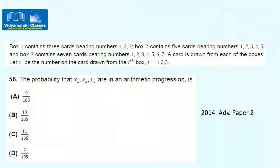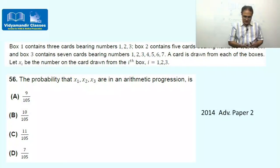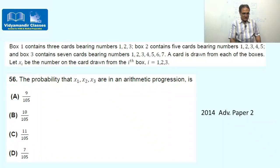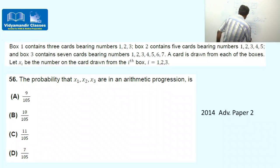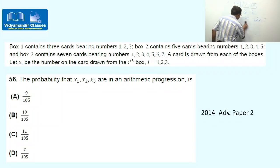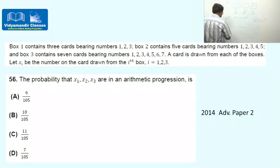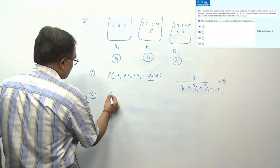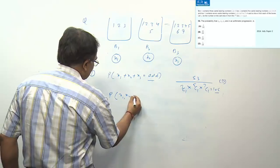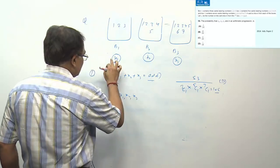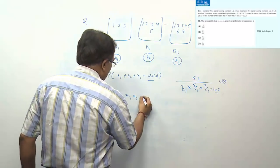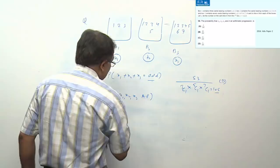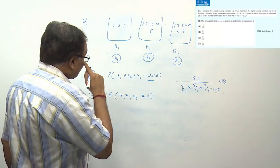Second part of the same passage: what is the probability that x1, x2, x3 are in arithmetic progression (in that order)? We enumerate all valid triplets (x1 from box 1, x2 from box 2, x3 from box 3) forming an AP.